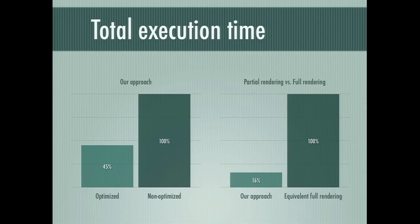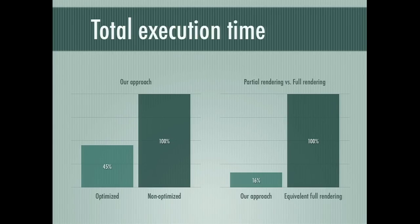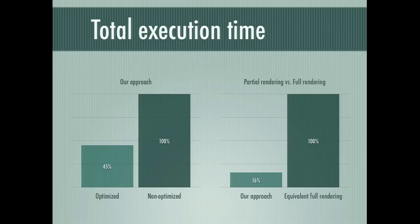Combining both optimizations, our total execution time dropped to about half. It only dropped by half because tasks like I/O, HTML parsing, and data structure initialization couldn't be improved. Compared to an equivalent method using a rendering engine like WebKit — even in the best case with images, JavaScript, and plugins all disabled — we can run in about 16% of that time, which is very significant at large document scale.